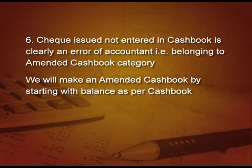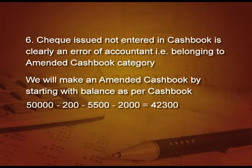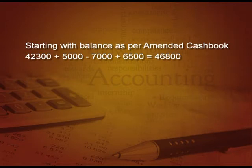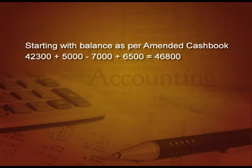First, we make the amended cash book, starting with balance as per cash book. On the debit side we write 50,000. Then on the credit side: minus 200 for bank charges, minus 5,500 for the dishonored check, and minus 2,000 for the check not entered, making the amended cash book balance 42,300. This is the balance as per amended cash book. When we start the bank reconciliation statement, we begin with this opening balance of 42,300 and rectify the remaining mistakes.